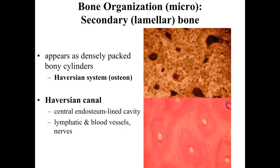Primary bone is replaced over time with secondary bone, also called lamellar bone — bone with concentric rings and concentric layers forming a nice three-dimensional, dense structure that provides a lot of strength along the axis of these structures. Secondary lamellar bone appears as dense, packed bony cylinders, and these bony cylinders are referred to as Haversian systems or osteons.